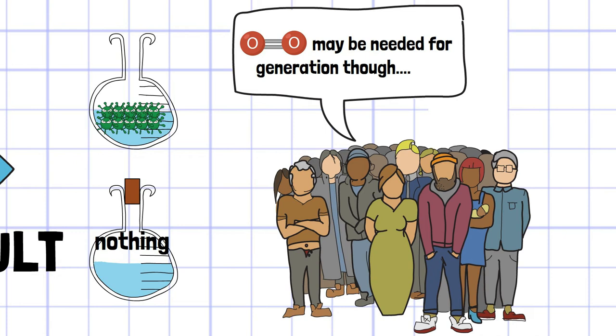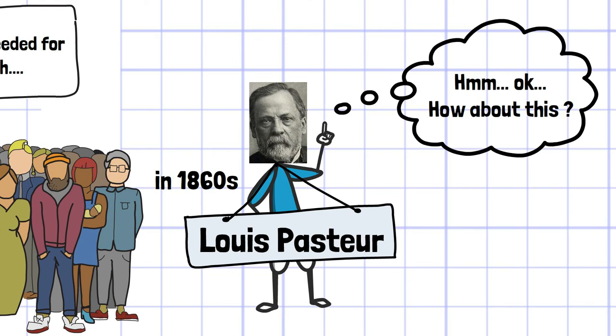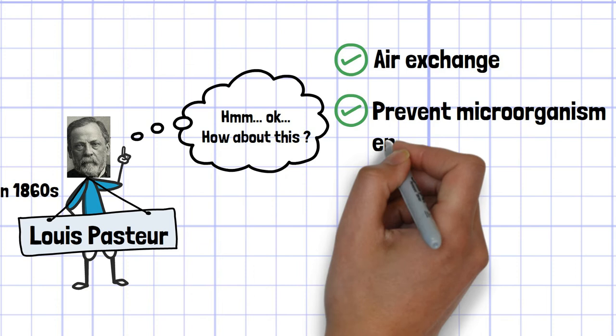Pasteur's experiment refuted those arguments. He devised the method to allow air exchange while preventing the entrance of microorganisms. As a result, he came up with the swan neck flask.